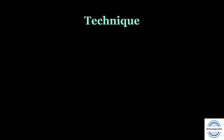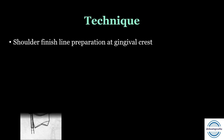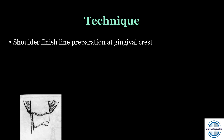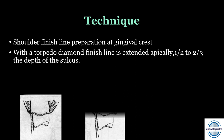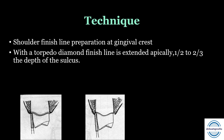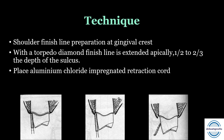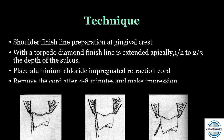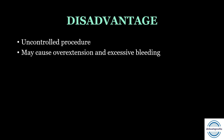Technique for rotary gingival curettage: first prepare a shoulder finish line at the gingival crest, then use a torpedo diamond to extend the finish line apically one-half to two-thirds the depth of the sulcus. Then place an aluminum chloride-impregnated retraction cord, remove after four to eight minutes, dry, and make the impression. The main disadvantage is that it is an uncontrolled procedure, which may cause over-extension and excessive bleeding.